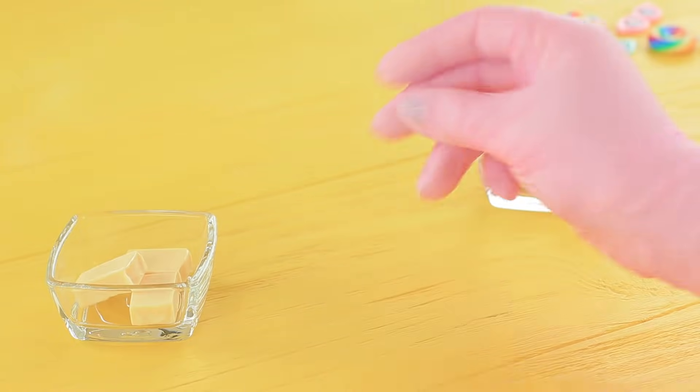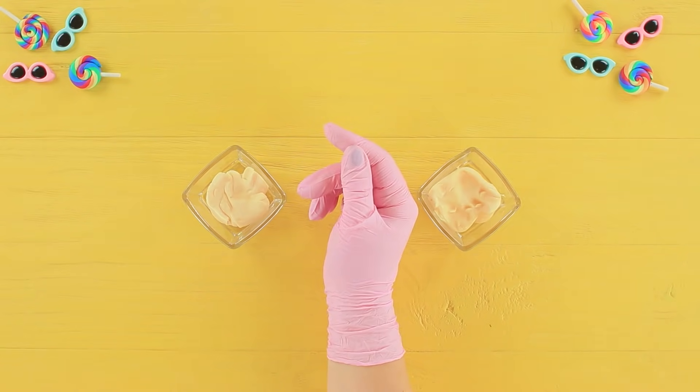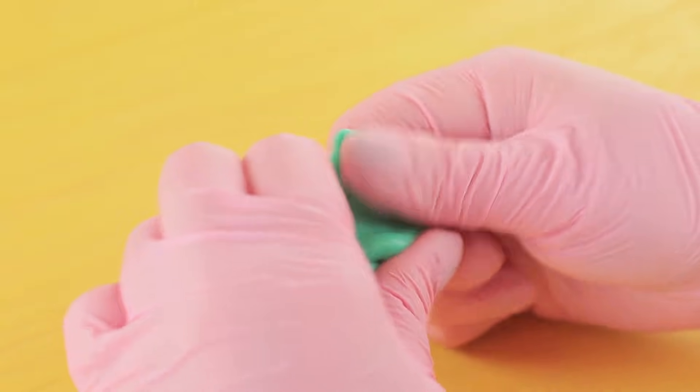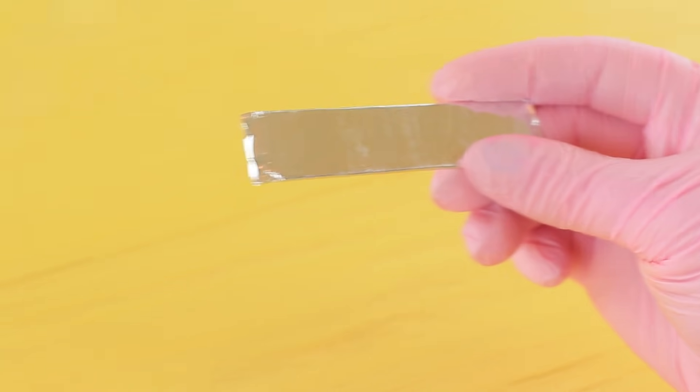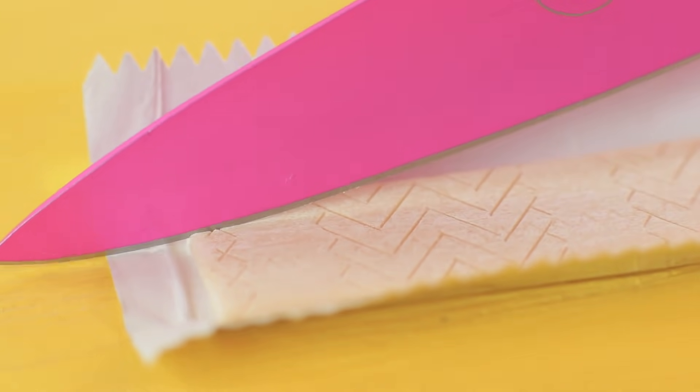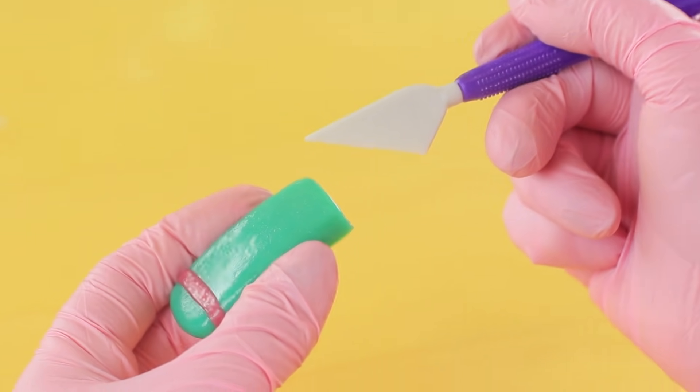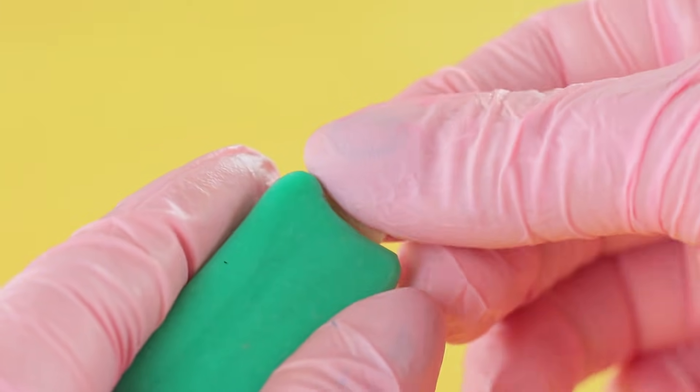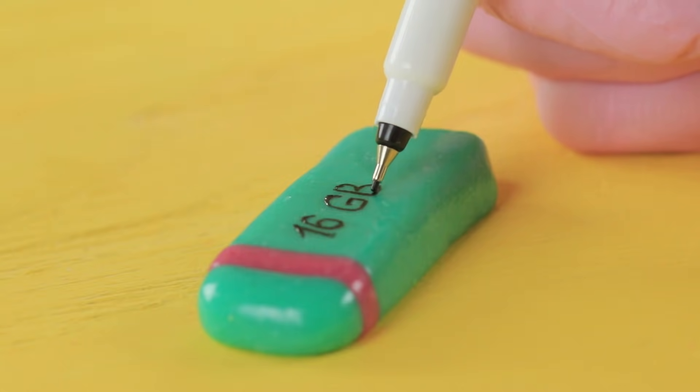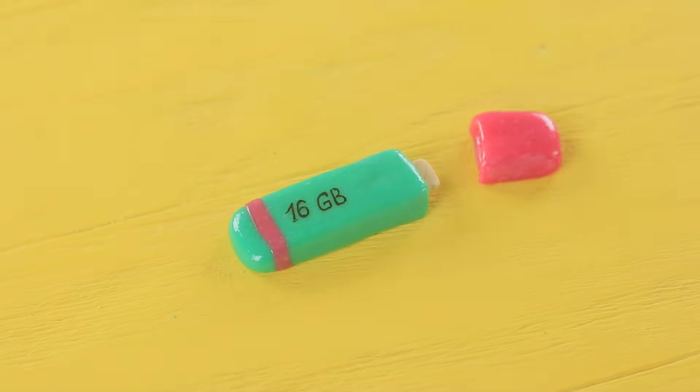Melt two portions of chewy candies in a microwave. Add food coloring to each portion. Shape a flash drive body and a cap of a different color. Cut a bubble gum stick to be of the same size as the body. Make a cut inside the sweet USB drive and stick the bubble gum in it. Draw signs on the flash drive with a food marker and close the cap.